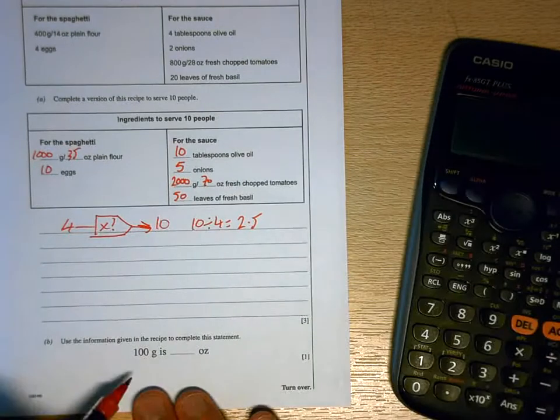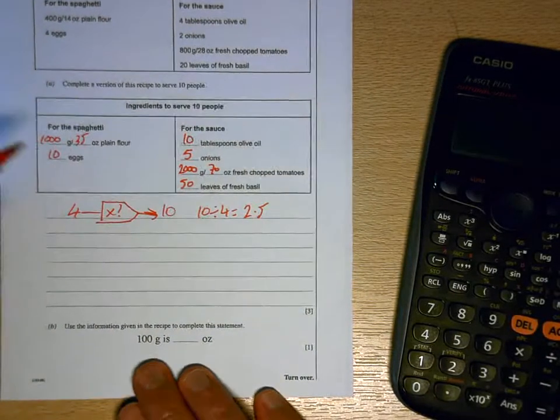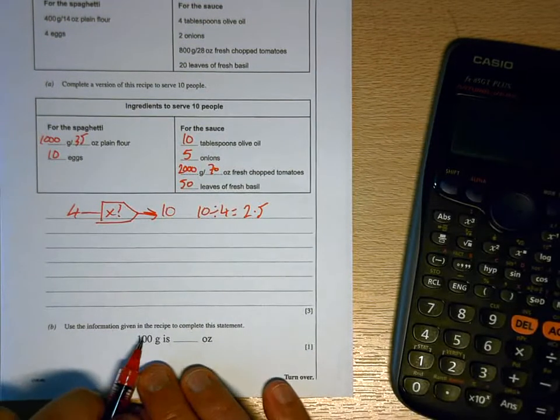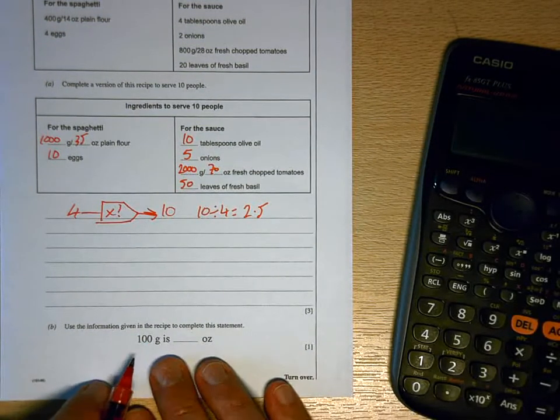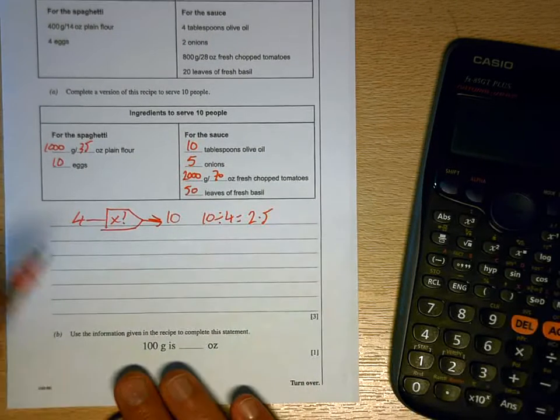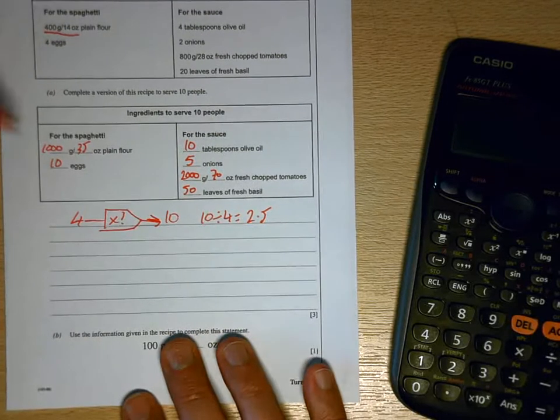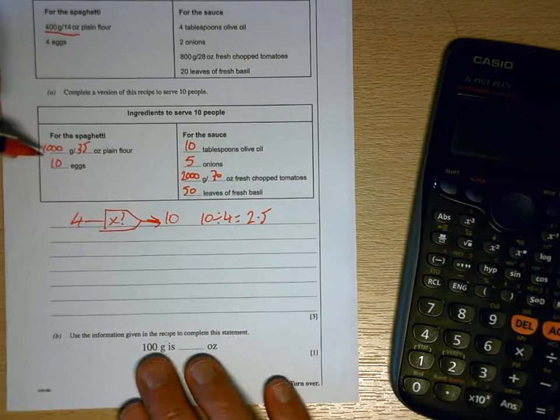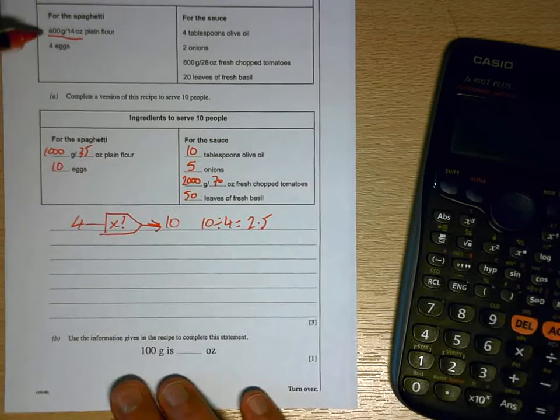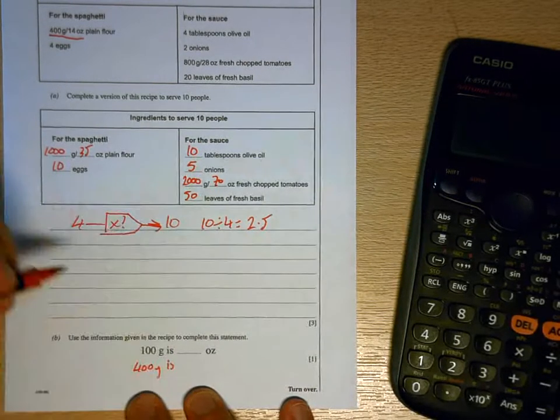And then the final part of this is a metric imperial equivalent. It says, use the information given in the recipe to complete this statement. 100 grams is something ounces. Well, we're given here, and we'll use this one because in case that one is wrong, we've made a mistake. We're given that 400 grams is 14 ounces.